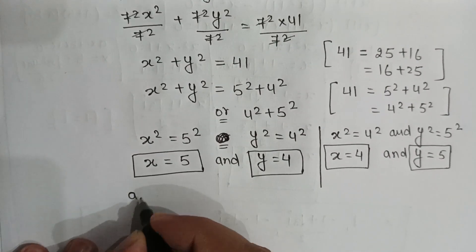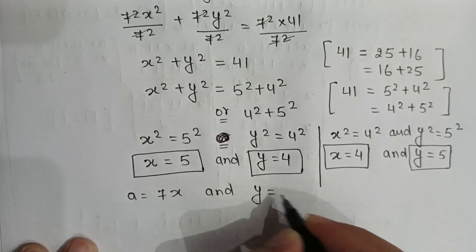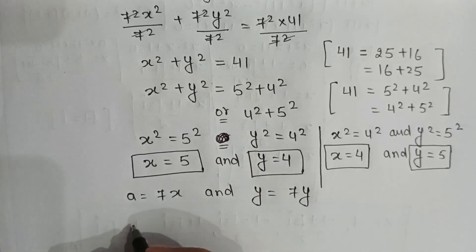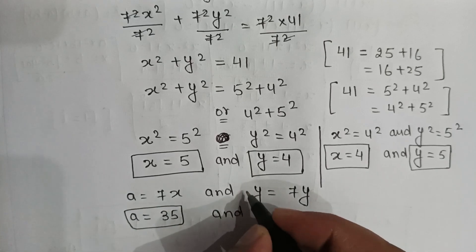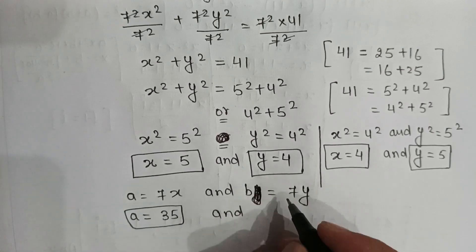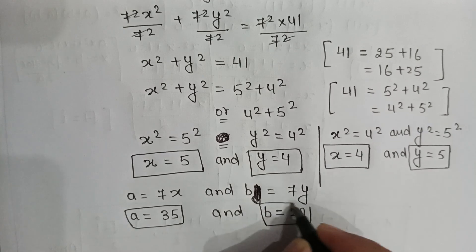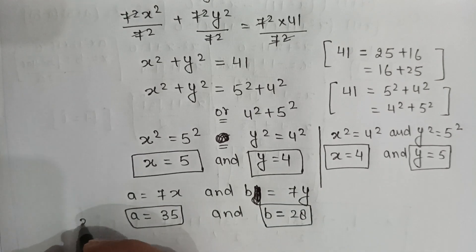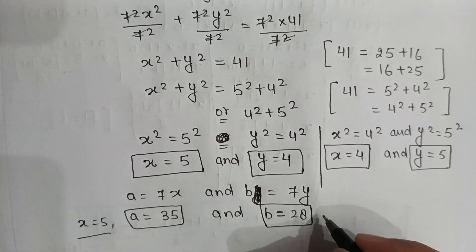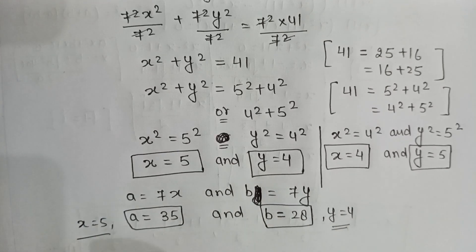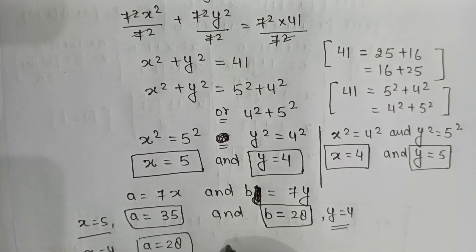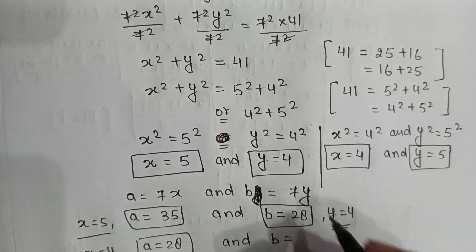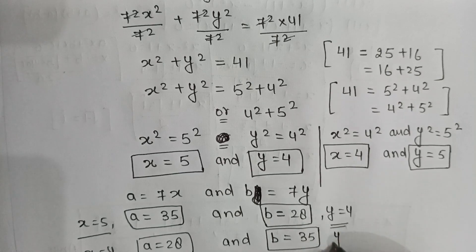The values of a and b are a = 7x and b = 7y. When x = 5, a = 35, and when y = 4, b = 28. Alternatively, when x = 4, a = 28, and when y = 5, b = 35.